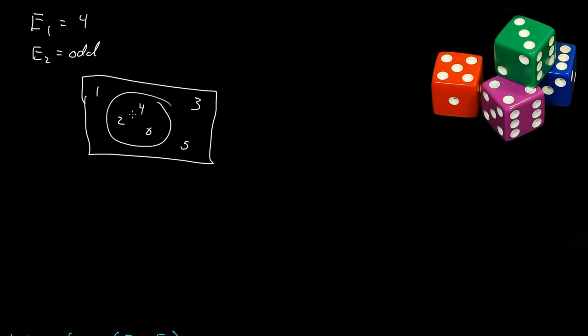Now, where does four, so let's do the probability of the intersection of event one, intersection event two. What's the probability of that? Well, what's the probability of it being a four and an odd?